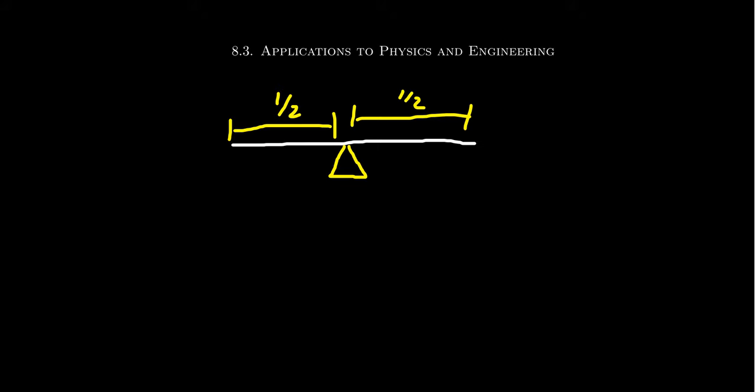Now, suppose that this same plank, which we're using for a seesaw now, has two children playing together on the board. So let's draw this again. Now we have two children, and I'm just going to draw them as blobs. You get one blob over here, and if the two children are equal in their mass, then again, the board will be balanced, and you can put the fulcrum in the middle.